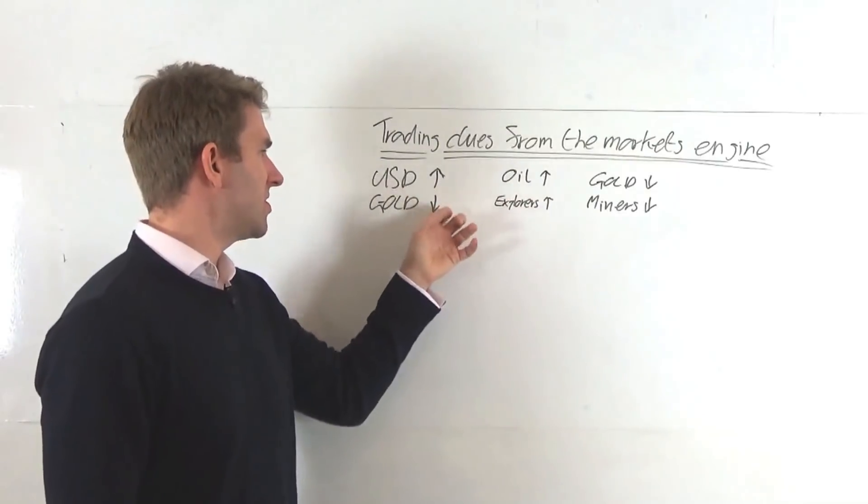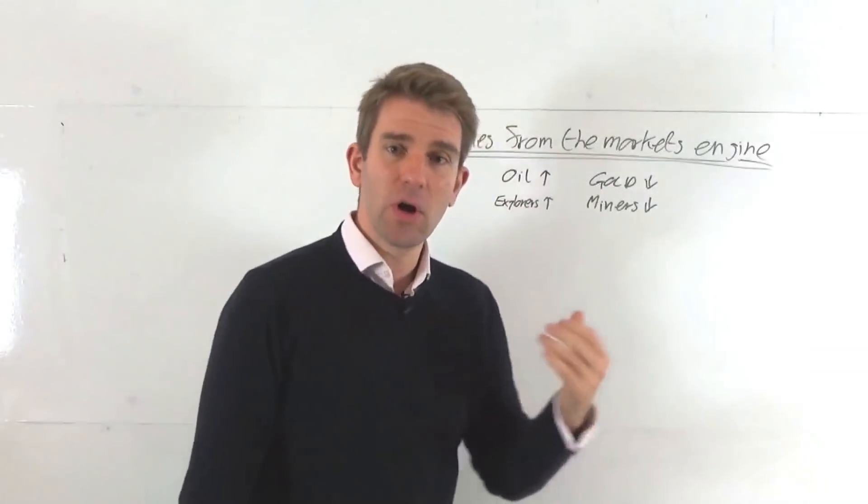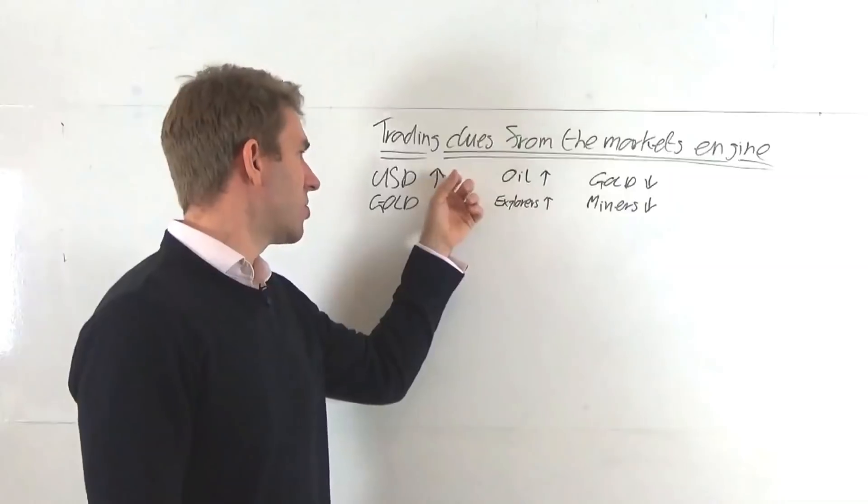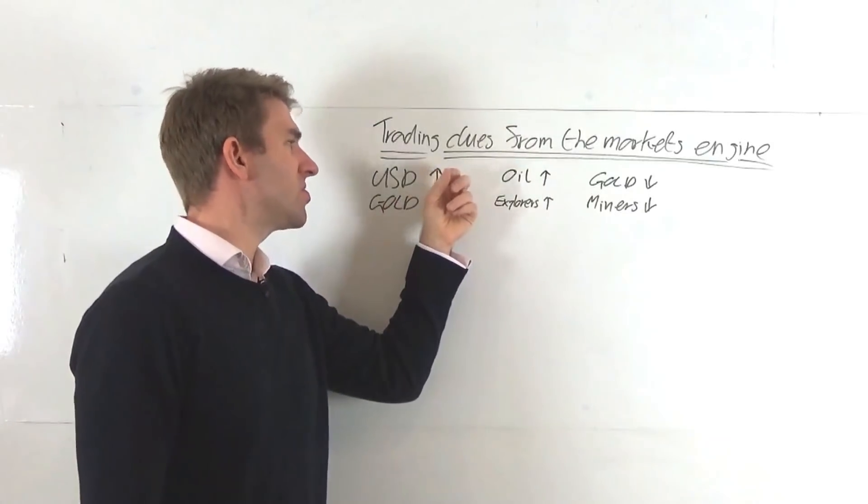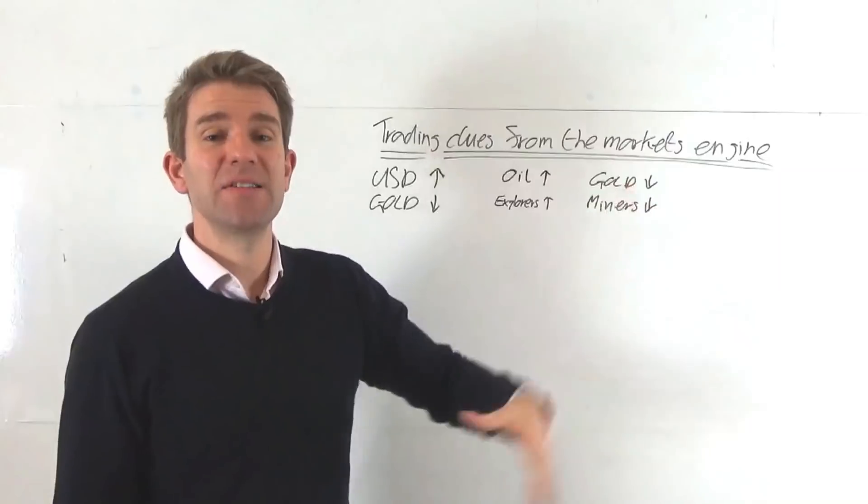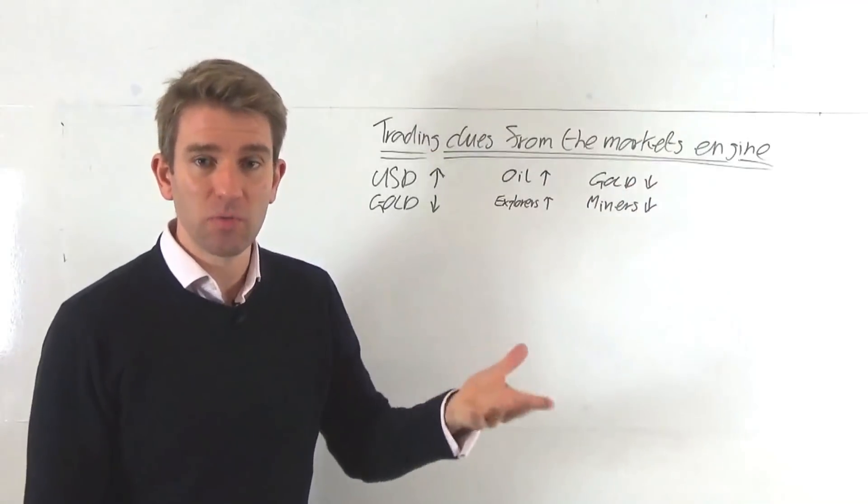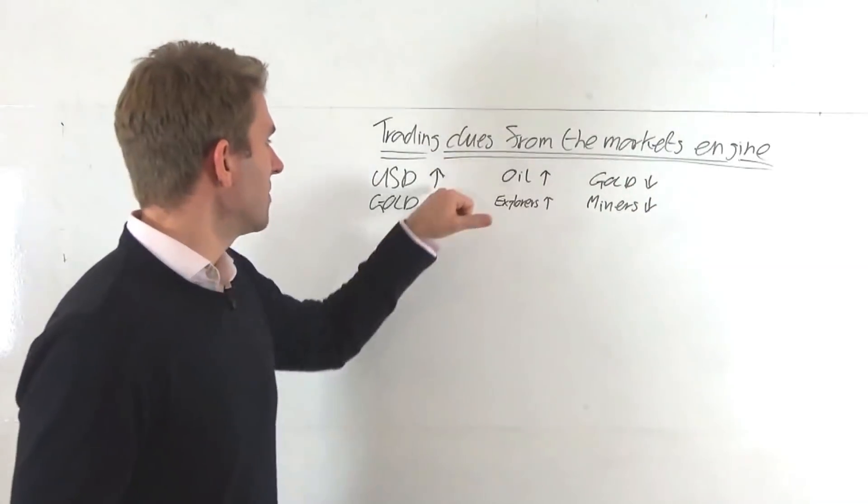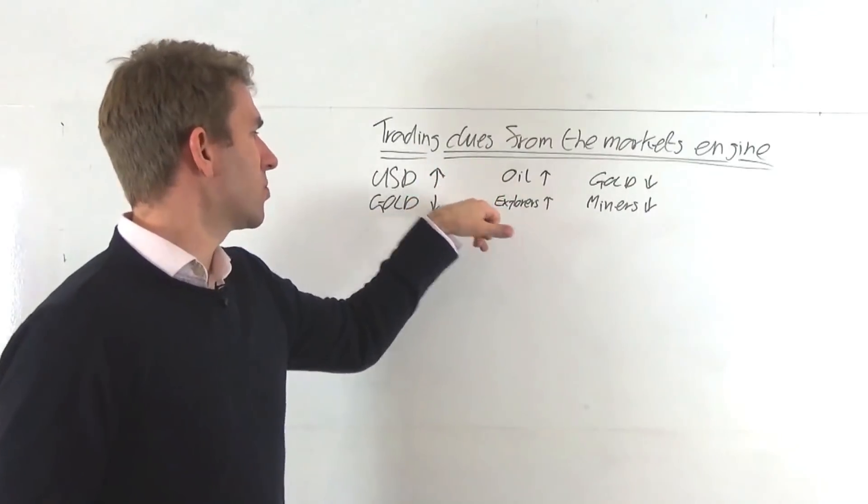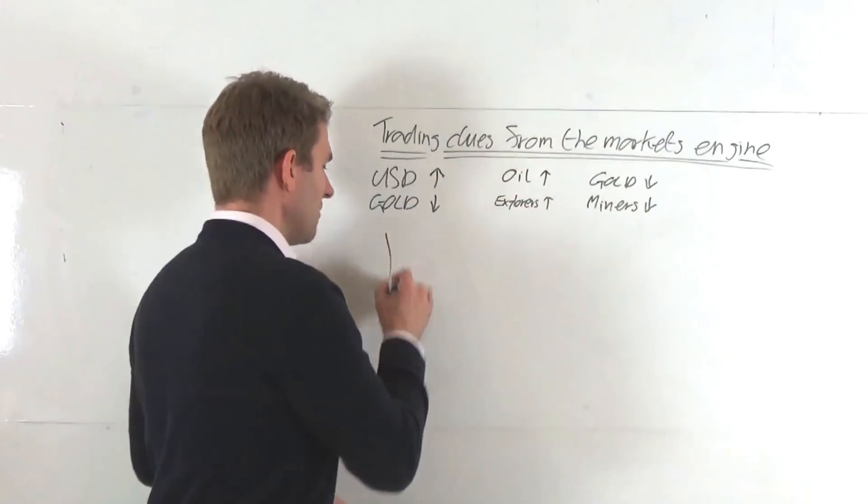So the inverse proportion of USD to gold, gold weakening or gold strengthening. US dollar strengthening or US dollar weakening normally has the inverse relationship to gold. So if we take that for example, if US dollar strengthening and gold is weakening, we would have obviously a chart, our USD strengthening, our gold weakening.